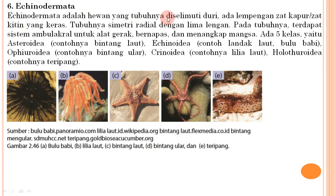Keenam, Echinodermata: hewan yang tubuhnya diselimuti duri dari lempengan zat kapur atau zat kitin yang keras; tubuhnya simetris radial dengan lima lengan; memiliki sistem ambulakral untuk alat gerak, bernapas, dan menangkap mangsa. Ada lima kelas: Asteroidea (bintang laut), Echinoidea (landak laut/bulu babi), Ophiuroidea (bintang ular), Crinoidea (lilia laut), dan Holothuroidea (teripang).